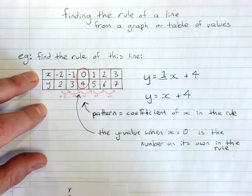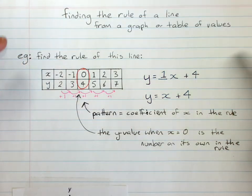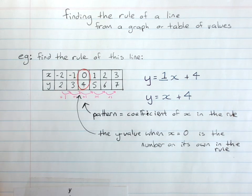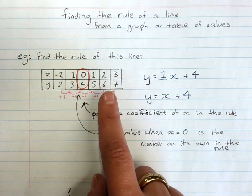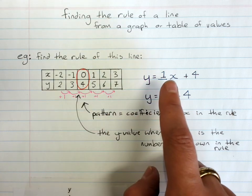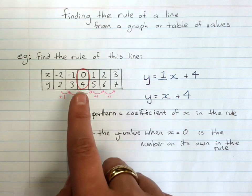Now later, probably next year, you'll learn a more mathematical way of putting this. But for now, that's how we get the rule. This is how much it goes up by every time I've got an extra x. This is our starting point.